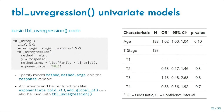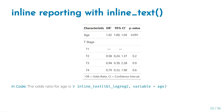There's also tbl_uvregression, which allows you to easily run univariate regressions for a set of selected variables. In this example, we take the trial dataset, select age, stage, and response, pass those to the function, specify the outcome (response), the method (glm), and any method arguments (family = binomial). The same helper functions available for tbl_regression — like exponentiate, bold functions, and add_global_p — can also be used with tbl_uvregression.